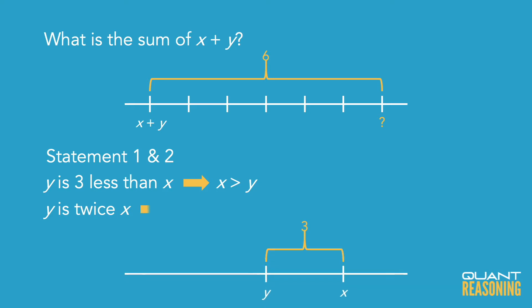So the question we have to ask ourselves is if I know the difference of two numbers on the number line, and I also know their ratio, would that be enough to infer their sum?